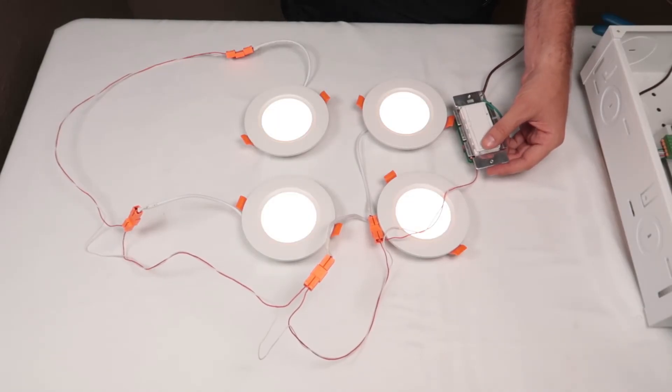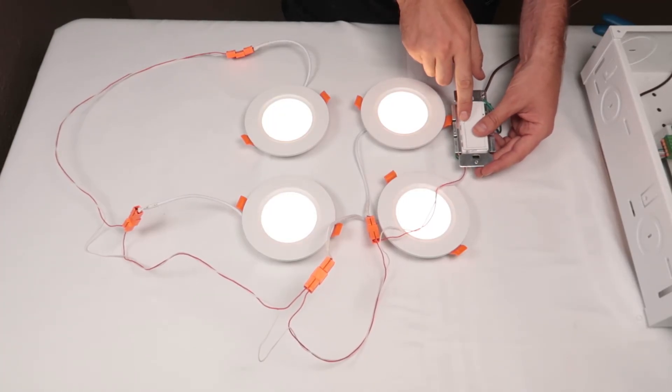Now that the switch is powered, we can check its function. Cycle it on and off several times. Work the slider up and down to check for proper dimming controls.